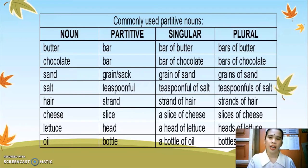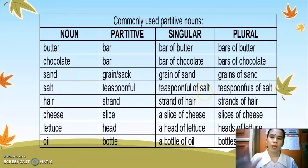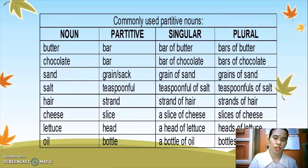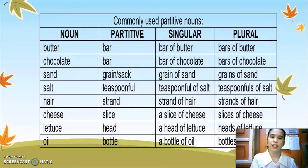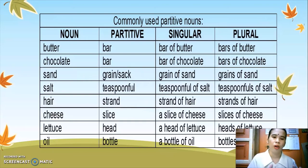Next is hair. Hair is the noun and the partitive is strand. To make it singular: 'a strand of hair.' To make it plural: 'strands of hair.' For cheese, slice is the partitive. The singular form is 'a slice of cheese' and the plural is 'slices of cheese.' For lettuce, the partitive is head. The singular is 'a head of lettuce' and the plural is 'heads of lettuce.' It can also be heads of cabbage, head of carrots, or heads of carrots.